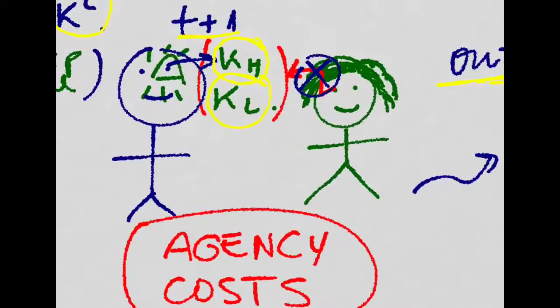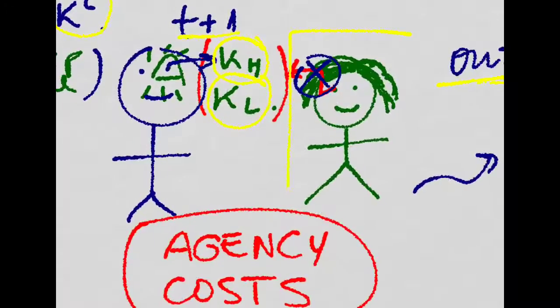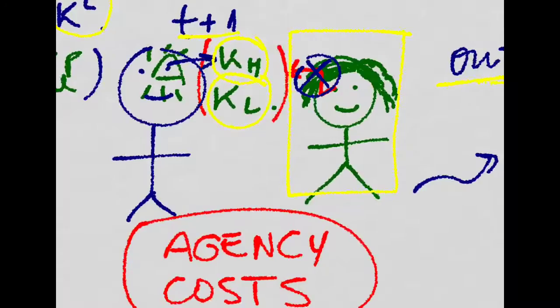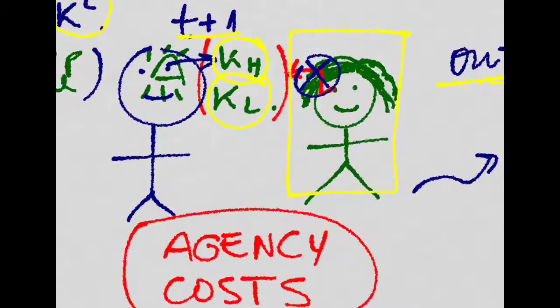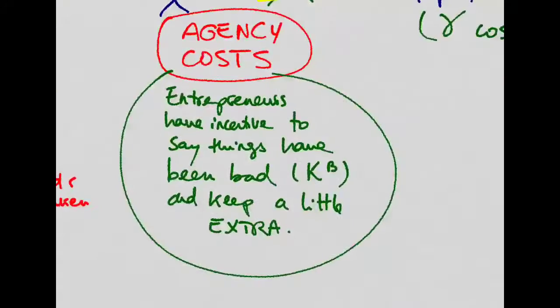Lenders cannot actually see this capital that is realized. So, the agency costs are basically due to the fact that entrepreneurs have the incentives to say that they have had a really bad year and that capital ended up being really low when they really had a good year so that they can get to keep a little extra, that they don't pay back that much to the lender. So, they cheat.